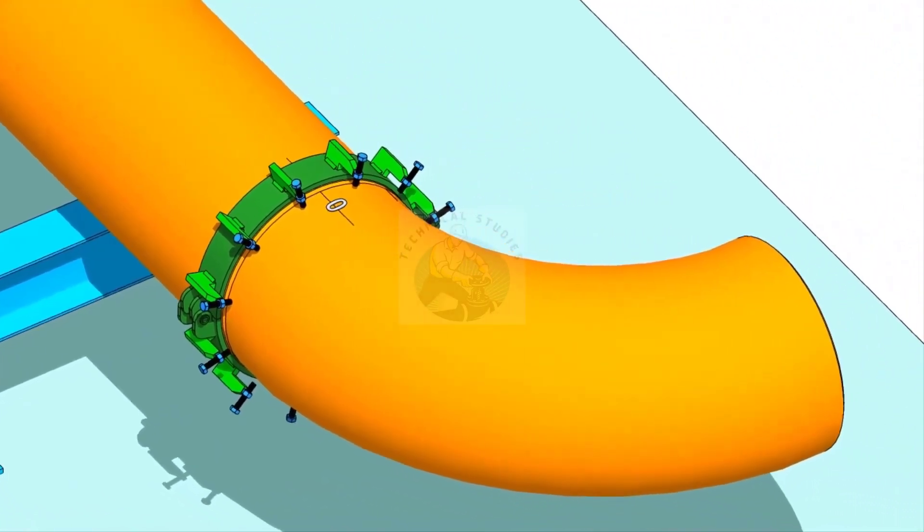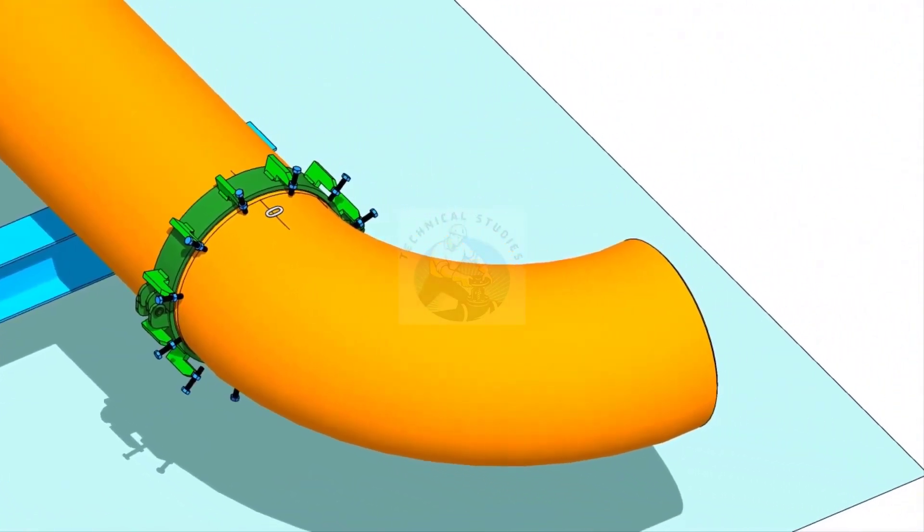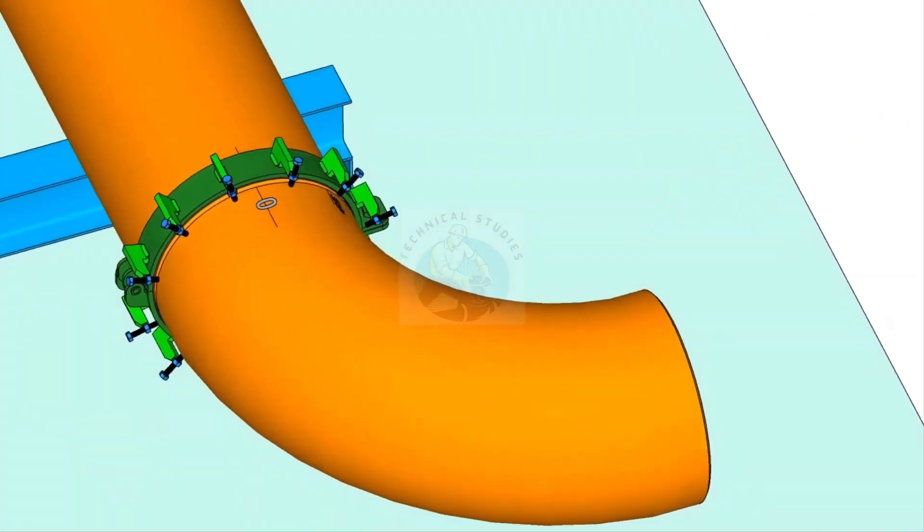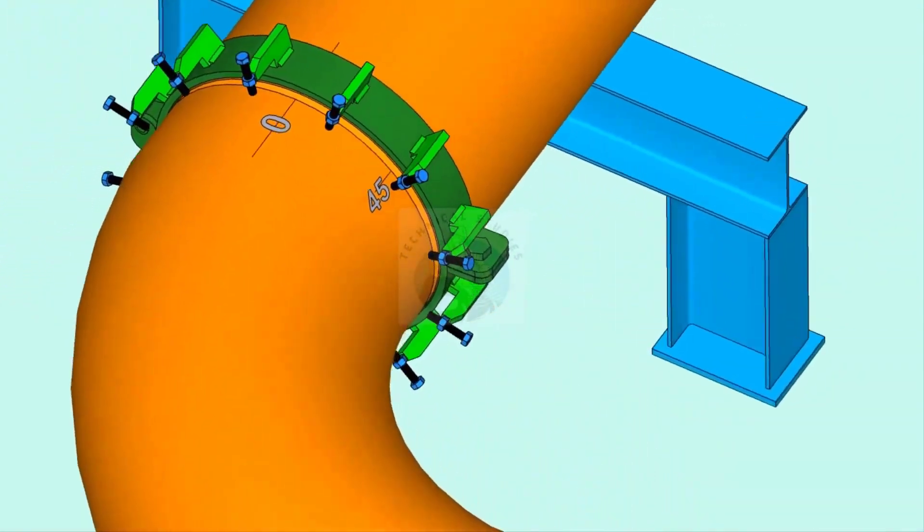Put the elbow on the pipe clamp. Make sure the marked end is near to the pipe. Arrange proper supports below the elbow.